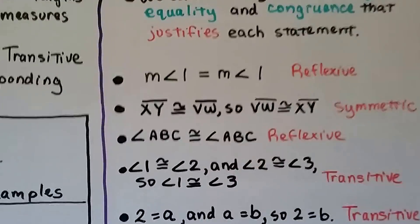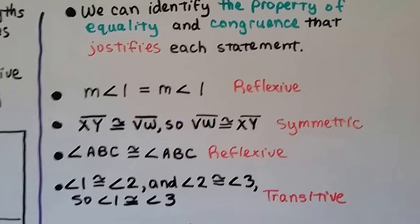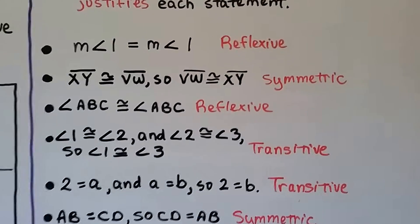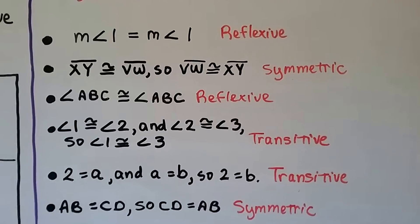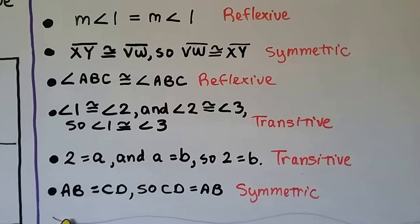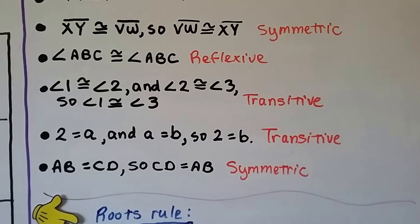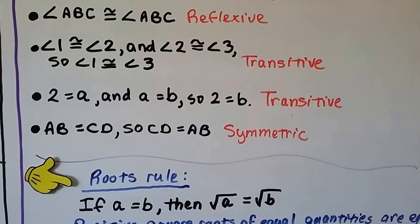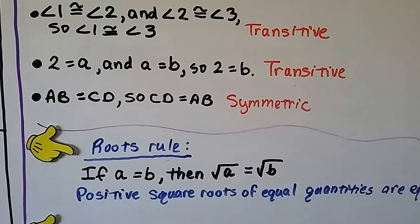We can identify the property of equality or congruence that justifies each statement. The measure of angle 1 equals the measure of angle 1 — that's reflexive. Segment XY is congruent to segment VW, so segment VW is congruent to segment XY — that's symmetric. Angle ABC is congruent to angle ABC — reflexive. Angle 1 congruent to angle 2, and angle 2 congruent to angle 3, so angle 1 congruent to angle 3 — transitive. 2 equals A and A equals B, so 2 equals B — transitive. AB equals CD, so CD equals AB — symmetric.